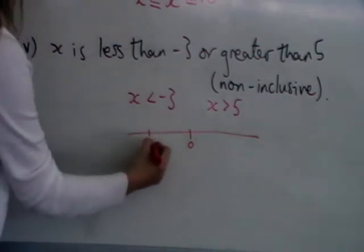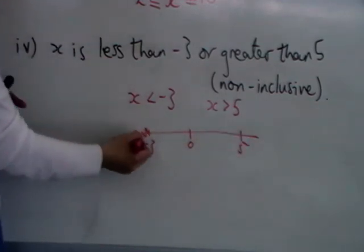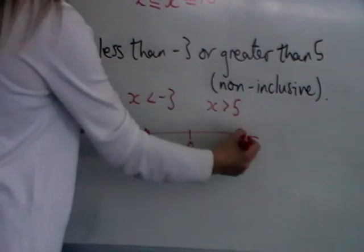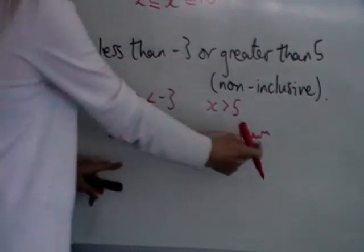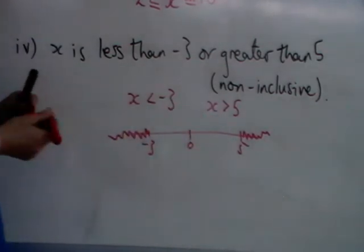For example, if you had a number line, the minus 3 will be here and the 5 will be here. Less than minus 3 is these numbers and greater than 5 is those numbers. Two separate sets of numbers, so you write it as two separate inequalities, don't write it as one.